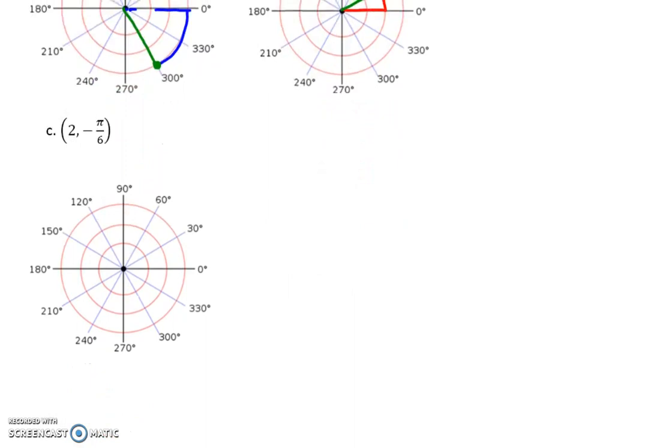And then the last one, we have 2. So again, we're coming out to 2. And then we're going negative pi over 6. So we're going to go down that 30 degrees. And there is your point on that directed line segment. Let's take a look at example 2.